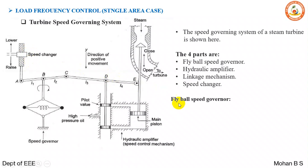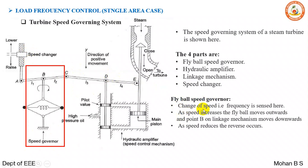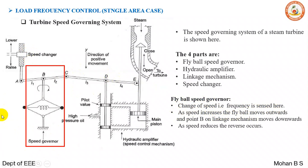The first part is the fly ball speed governor. This entire setup is the fly ball speed governor. Changes of speed — and in turn frequency — are sensed here. As speed increases, the fly balls move outwards and point B on the linkage mechanism moves downwards. As speed reduces, the process is reversed.